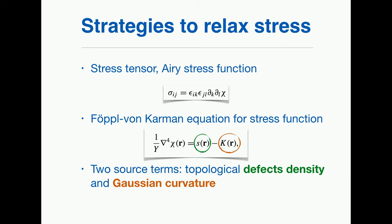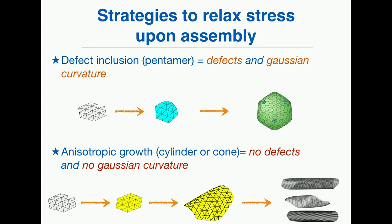By writing this equation, you identify two strategies to relax the stress. The first is that if you have Gaussian curvature, you must induce defects to compensate — that is the strategy of defect or pentamer inclusion during assembly. The other strategy is to have no defects and no Gaussian curvature. You can still have curvature by taking a cylinder or cone, which has vanishing Gaussian curvature. You end up with cylinders, which have been seen in simulations.